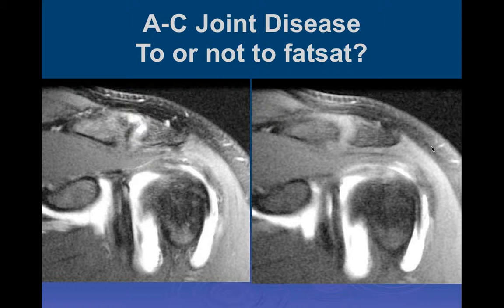Here are two fat-suppressed images. What do you think of these two studies? It looks like there's minimal to moderate AC joint arthrosis, and it is depressing or abutting the supraspinatus myotendinous junction.